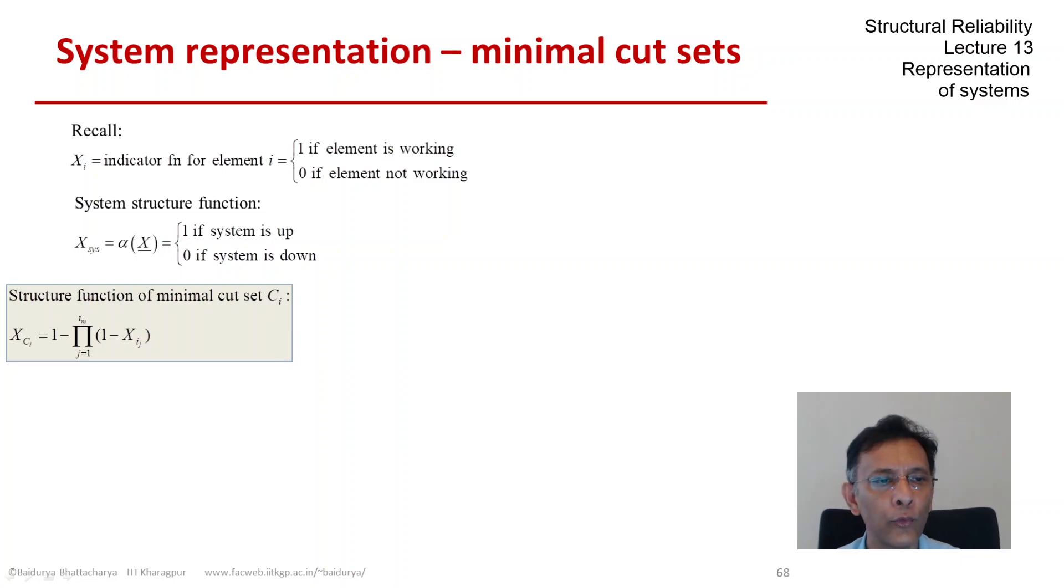We have looked at what the structure function for a purely parallel system would look like. Since the minimal cut sets in themselves are purely parallel, the structure function for each such cut set, for the ith cut set ci, would look like this as you see on your screen in terms of the indicator function for all the constituent elements of that cut set.